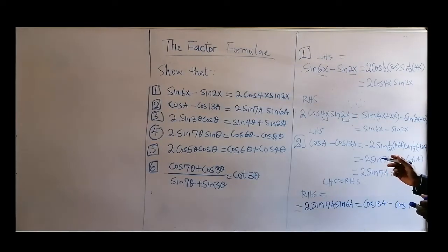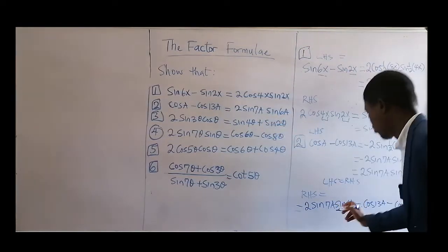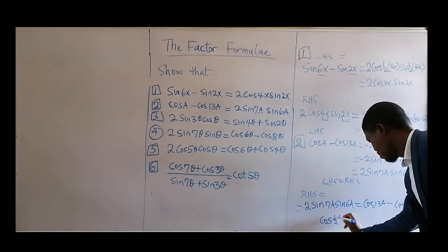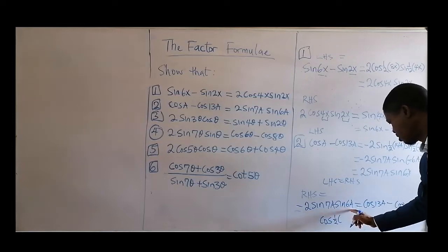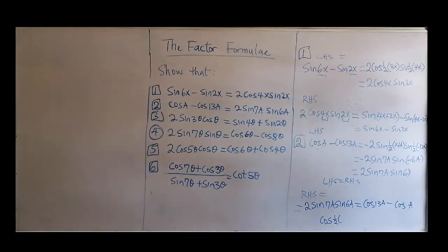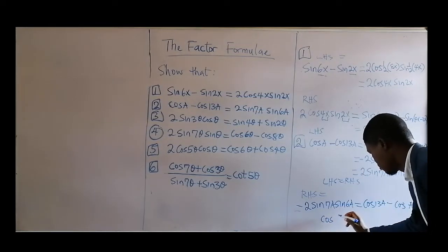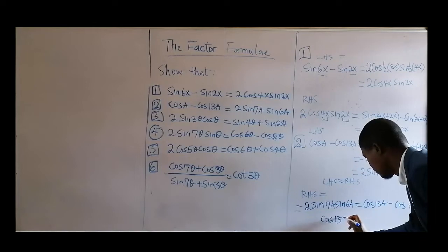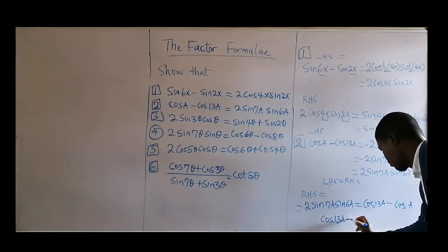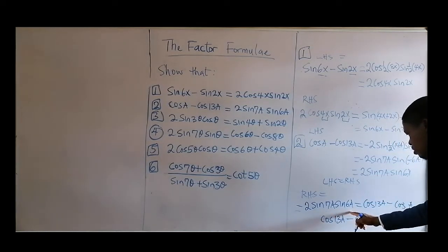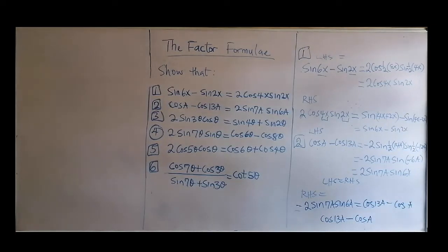When you have a product of sine times sine, that will become cosine. Half into brackets: 7a plus 6a = 13a, then minus cosine of 7a minus 6a = 1a. That is what you are going to get from the right-hand side.